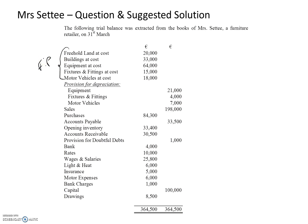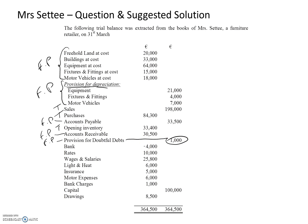If it's to go into the statement of financial position, I'll put FP beside it. Starting at the top, we can see this first group of items — they're all assets, non-current assets, and they all go into the statement of financial position. The next group, under the provision for depreciation, relates to depreciation on the non-current assets and will also appear in the statement of financial position. Sales and purchases appear in the trading account. Accounts payable will be a current liability in the statement of financial position. Opening inventory goes into the trading account. Accounts receivable will be a current asset in the statement of financial position.